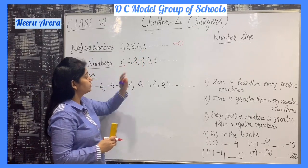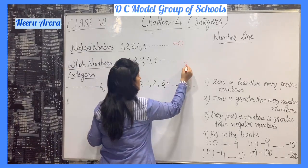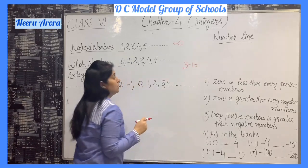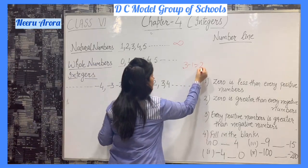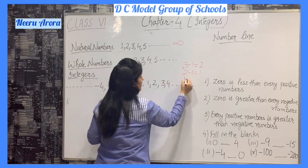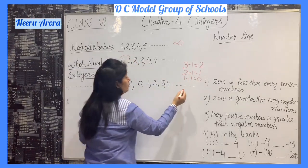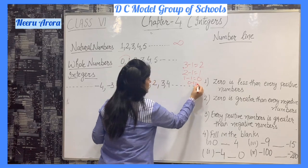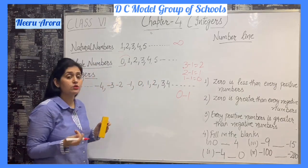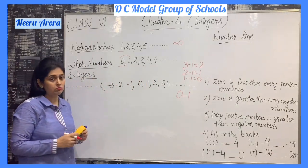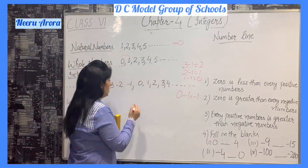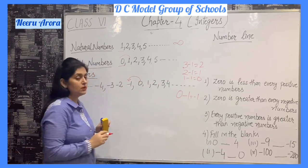The predecessor of 3 is 2. If we do 3 minus 1, we get 2. The predecessor of 2 is 1. The predecessor of 1 is 0. Now if we talk about the predecessor of 0, we do 0 minus 1. So the predecessor of 0 is minus 1.